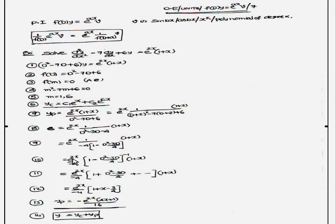So if you did like that e^(2x) by -4 into (1 - (D² - 3D)/4)^(-1) into (1+x).